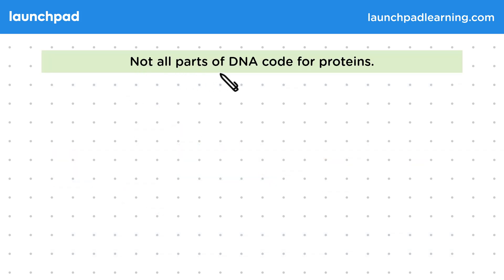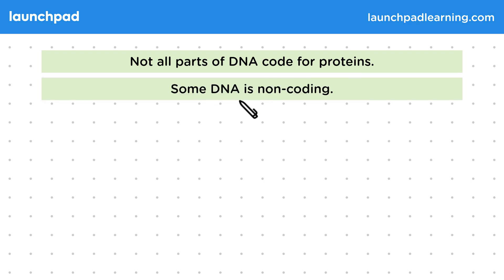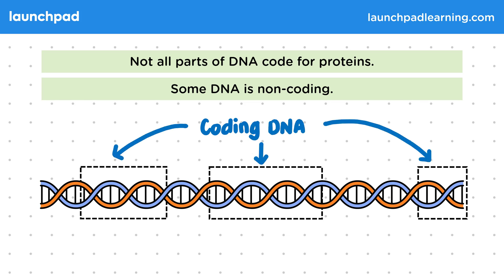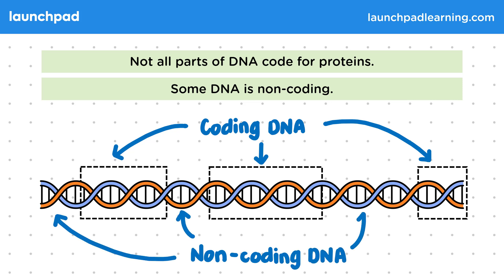Not all parts of DNA code for proteins — some DNA is non-coding. The sections highlighted by these dashed boxes show coding DNA, and between these sections of coding DNA there is non-coding DNA. So what does non-coding DNA do?